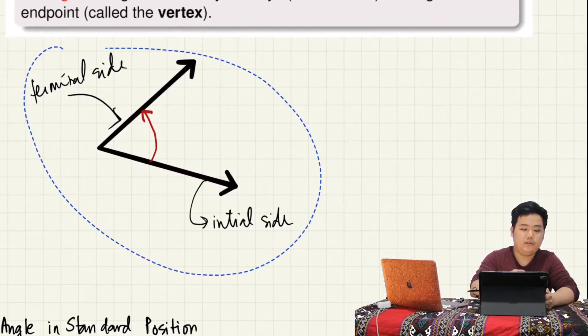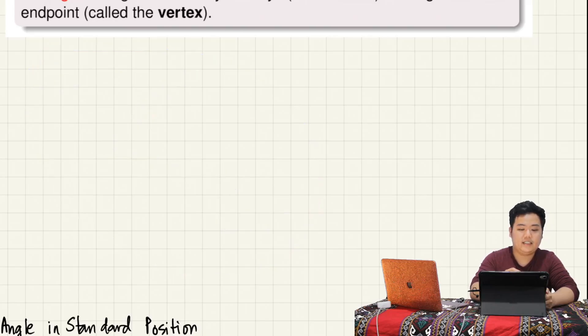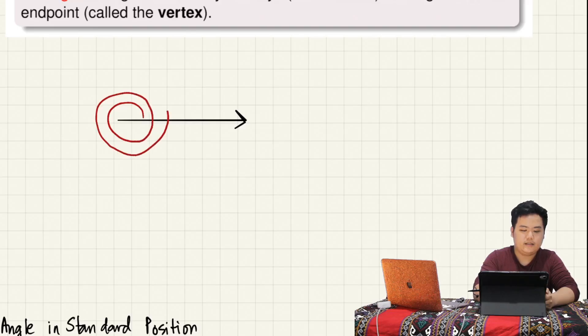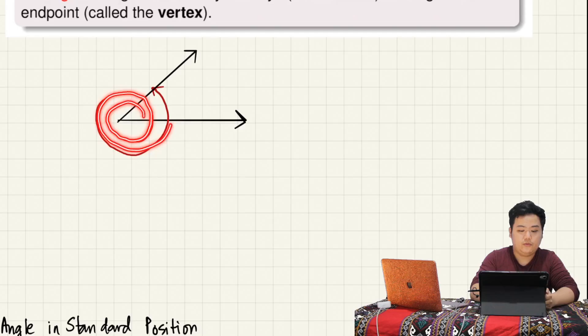Yung angles natin pwedeng lumampas ng 360 degrees. Paano natin idodrawing yun? Let's say this is the initial side. Iikot tayo from here, more than 360 degrees. Pwedeng ganyan. You stop here. Itong angle na to, nakailang ikot siya? One, two, more than two revolutions. Ganyan natin idodrawing ang mga angles natin.